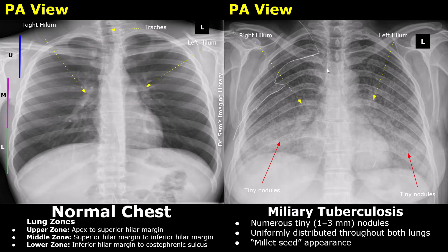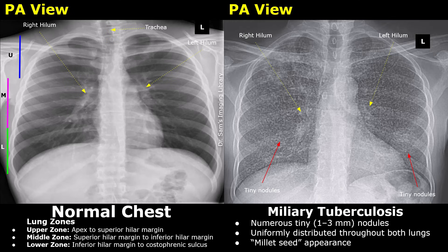Miliary tuberculosis refers to diffuse tuberculous disease of the lungs and has poor prognosis. In this type of TB, there is diffuse involvement of both lungs. You will find numerous tiny nodules measuring 1 to 3 mm throughout the lungs, appearing as tiny white dots which resemble millet seeds — this appearance is termed the millet seed appearance. This feature must be correlated with other tests and the patient's history.